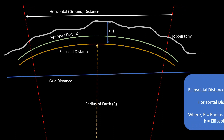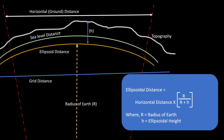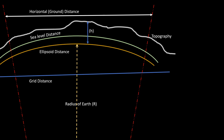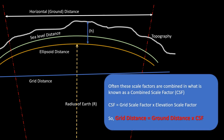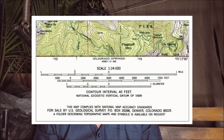Let's draw the radius of the earth and topographic height from the ellipsoid. The formula for ellipsoidal distance is horizontal distance multiplied by r divided by r plus h, where r is the radius of the earth and h is the ellipsoidal height. This r over r plus h is also known as the elevation scale factor. Most often the grid scale factor and the elevation scale factor are combined to get the combined scale factor, or CSF. So if you want to find the grid distance, that will be ground distance multiplied by the combined scale factor.